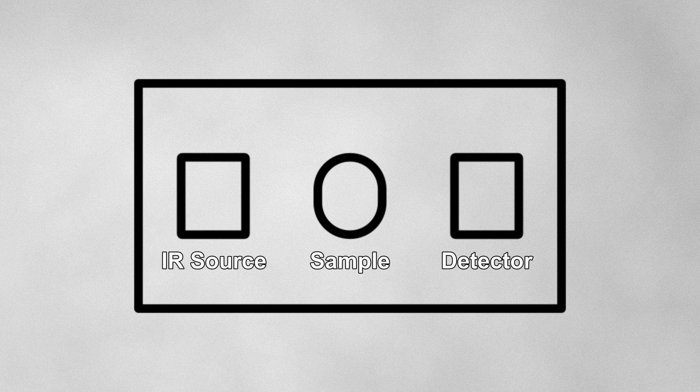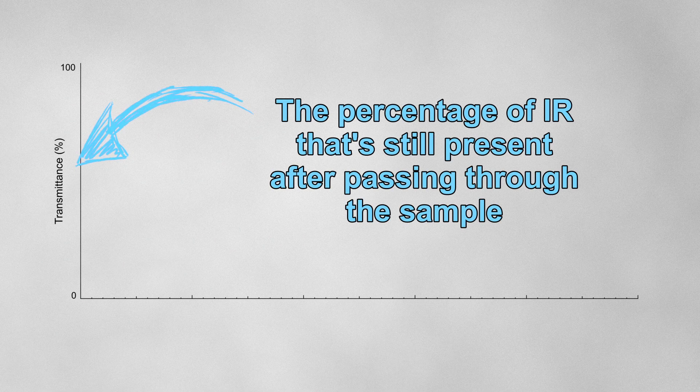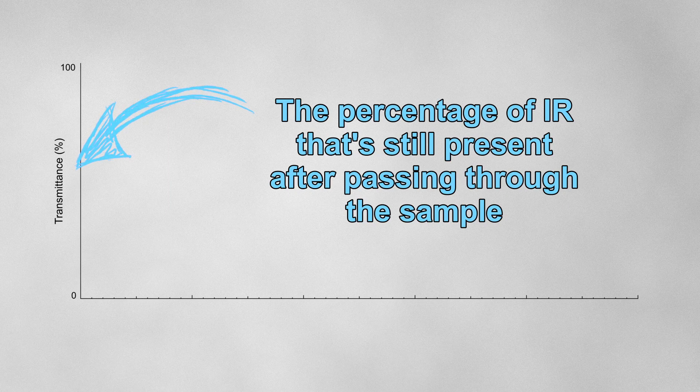Infrared spectroscopy is a relatively simple technique. When we run an IR spectrum, we pass a beam of infrared radiation through a sample. The beam then hits a detector, which is located on the other side of the sample. This detector measures the transmittance, or in other words, the percentage of IR that's still present after passing through the sample. A transmittance of 100% means that none of the beam was absorbed by the bonds in the sample, and so all of it hit the detector. A transmittance of 0% means all of the beam was absorbed by the bonds in the sample, so none of it hit the detector.